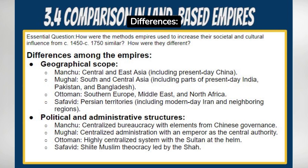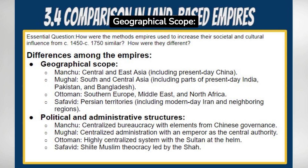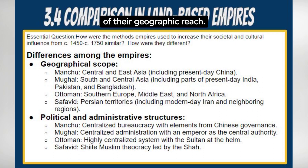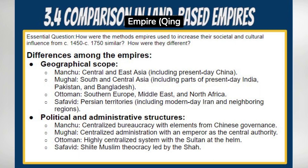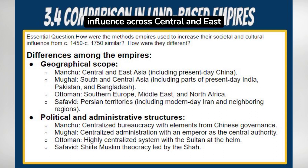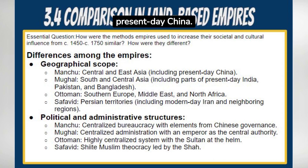Differences. Geographical scope: the empires differed in terms of their geographic reach. The Manchu Empire, or Qing Dynasty, extended its influence across Central and East Asia, including present-day China.